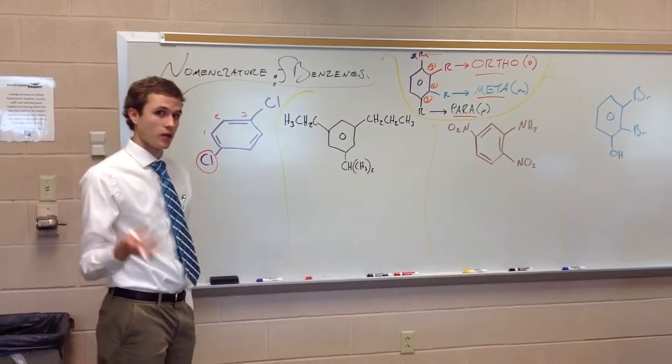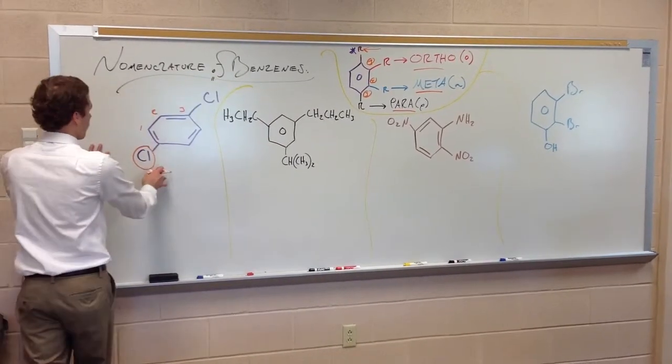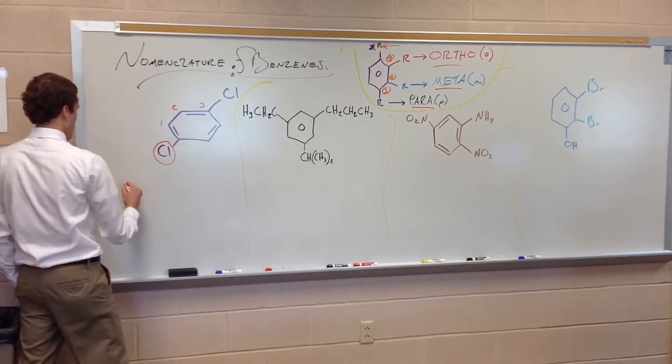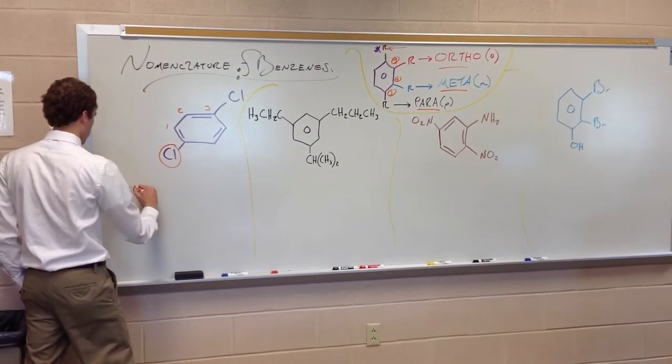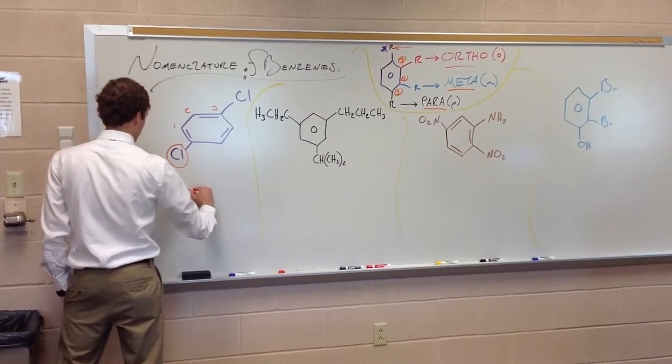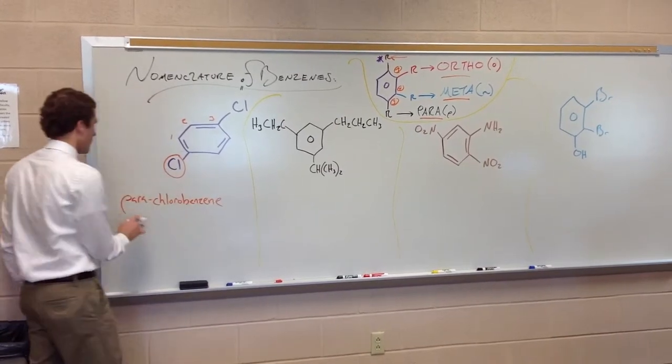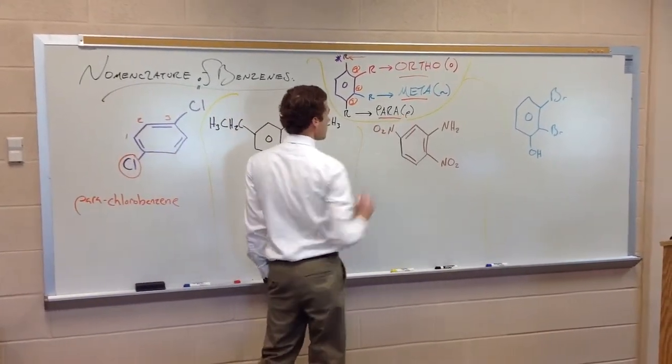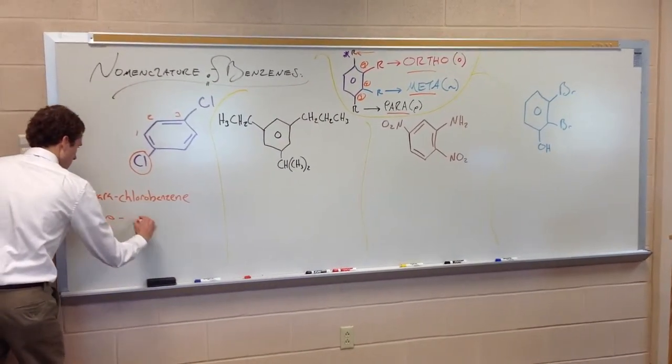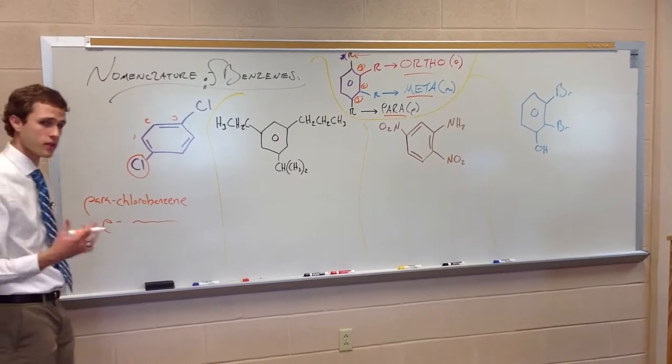So you don't need to write in dichlor or anything like that, because when you say para or meta, you're saying that these groups are the same automatically when you're writing in one type of groups like chlorine or something. So we have para chloro benzene. Now, if you've noticed, I've written P in parentheses next to that. That's because you can also just write P chloro benzene. You don't need to write out the whole word para. That's understood as the same thing.